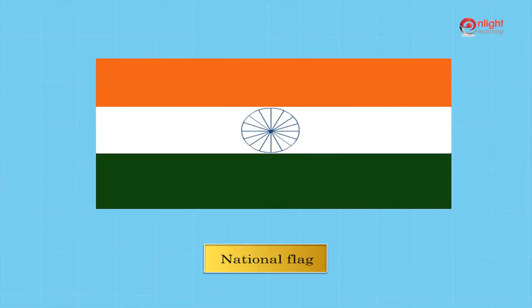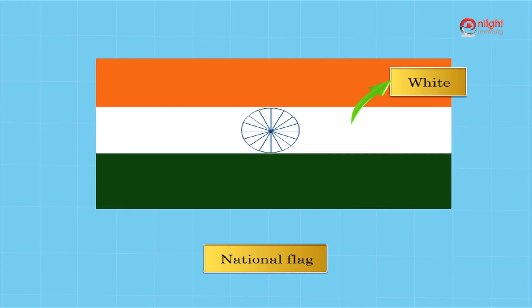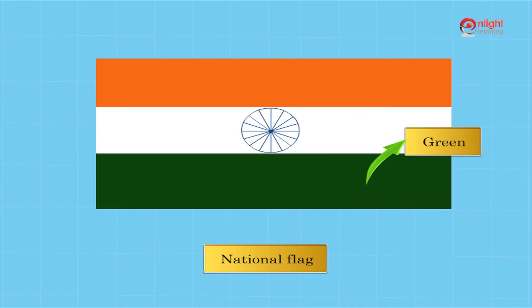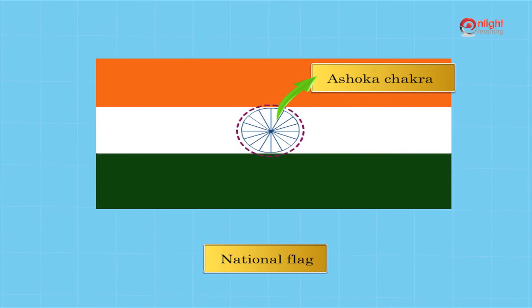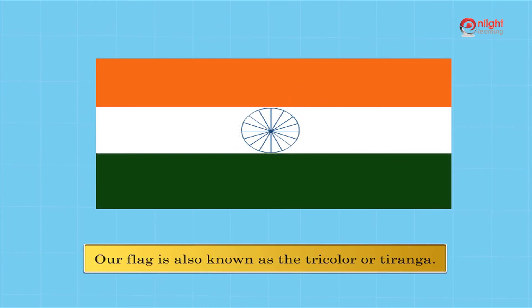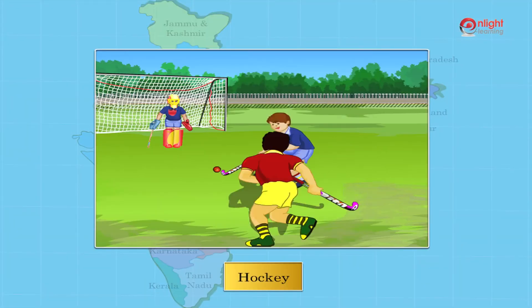Our national language is Hindi. Our national anthem is Jana Gana Mana. Our national flag has three colors: saffron at the top, white in the middle, and green at the bottom. There is an Ashok Chakra in the white band which has 24 spokes. Our flag is also known as the tricolor or Tiranga.